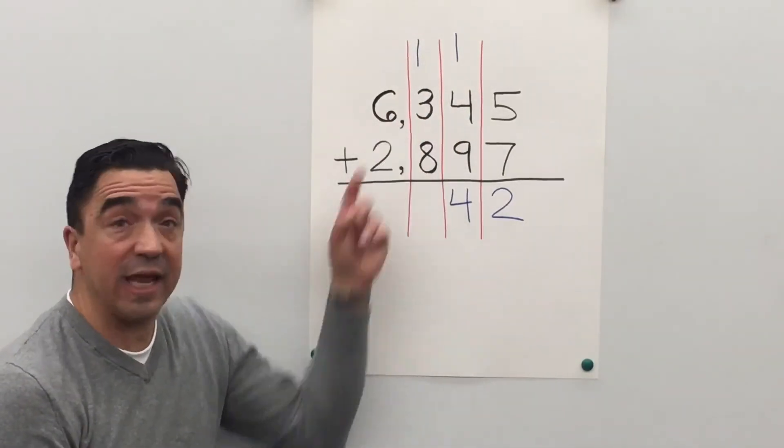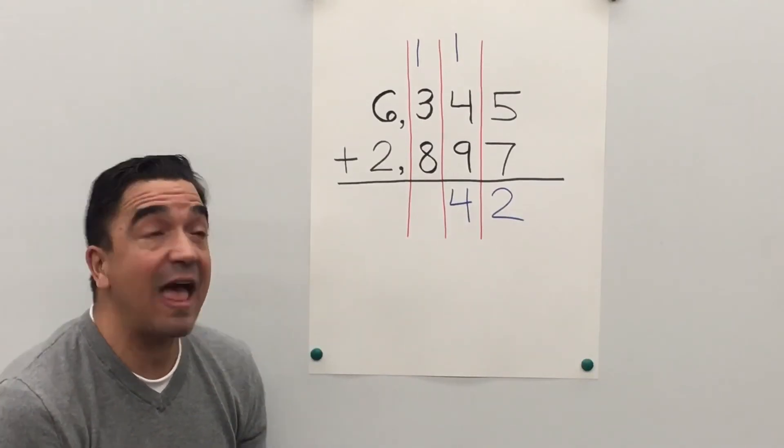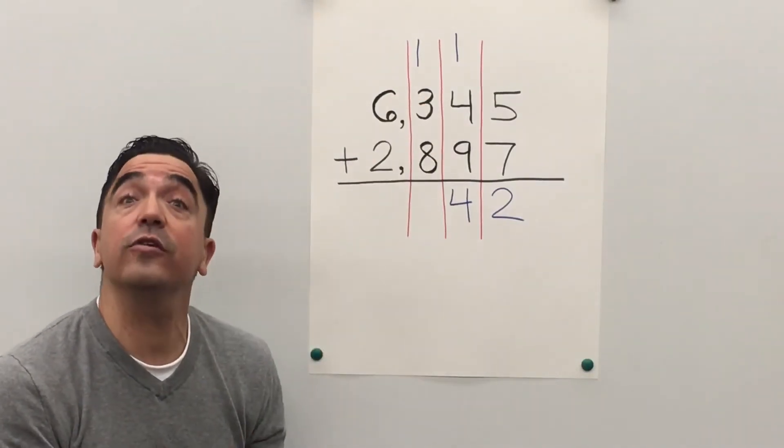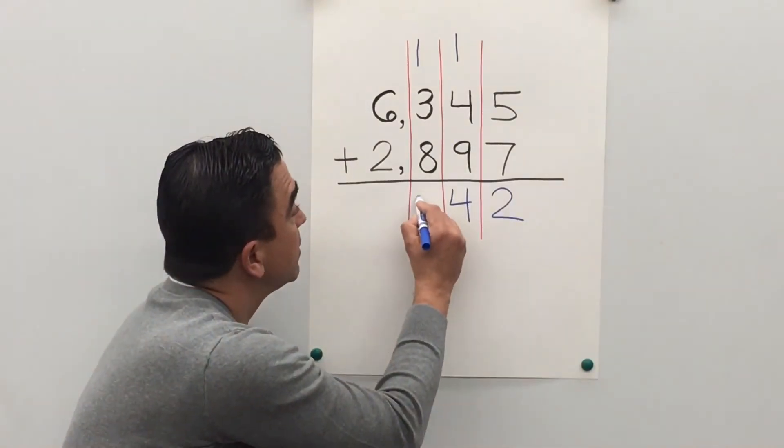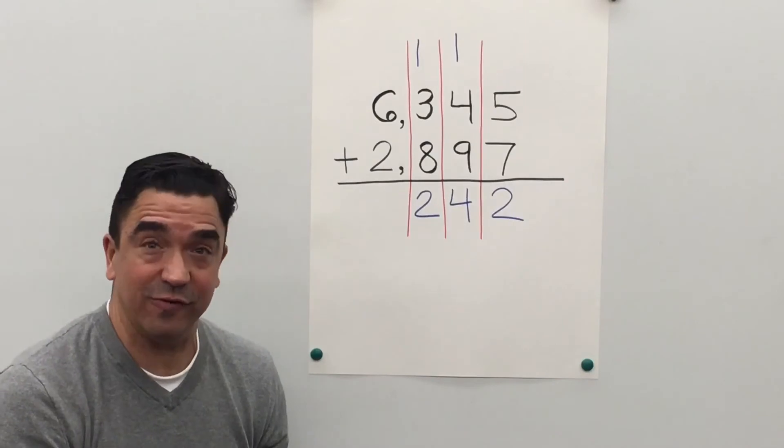3 plus 8 is 11. 11 plus 1 is 12. Regroup the one into the thousands place.